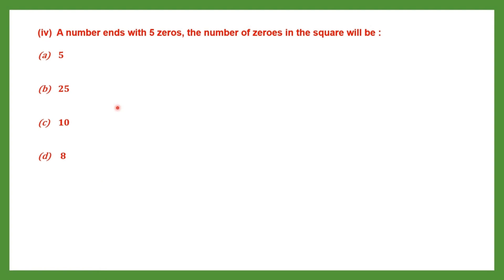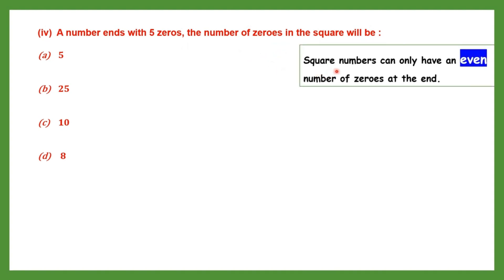Question 4: a number ends in 5 zeros — how many zeros will its square have? Square numbers can only have an even number of zeros. So 5 zeros become 5 × 2 = 10 zeros. The answer is option C, 10 zeros. We will stop here for now. In our next video we will do the remaining questions. Thank you, children.